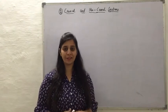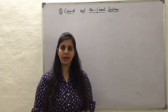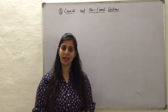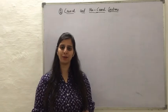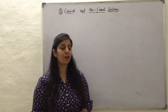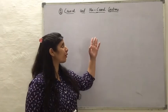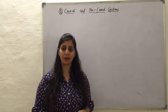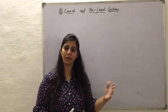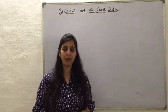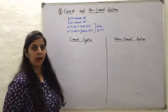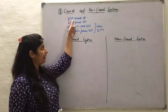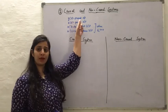A system is defined as a causal system if its response depends upon the present and the past values of the input. And it is called a non-causal system if the response of the system depends upon the future values of the input along with present and past values. Here, y(t) will denote the present output.